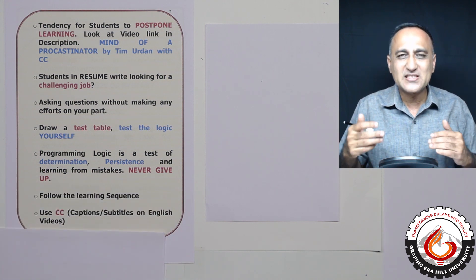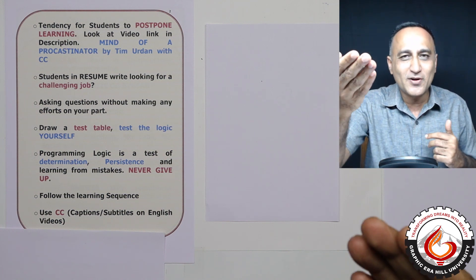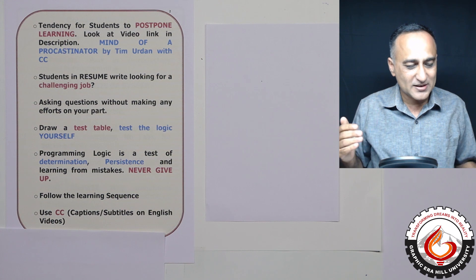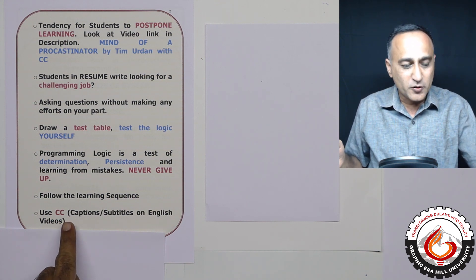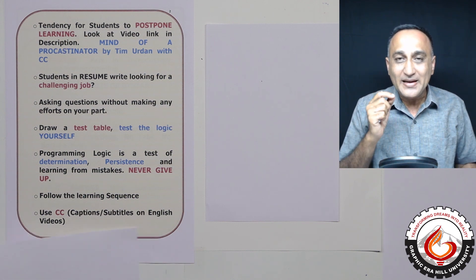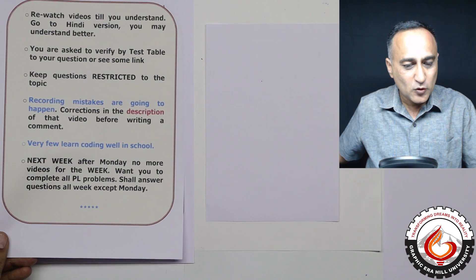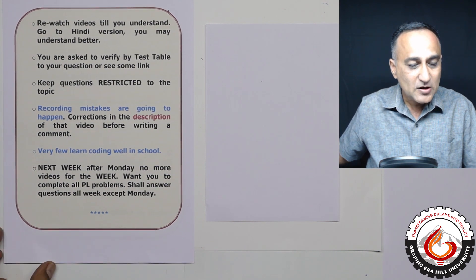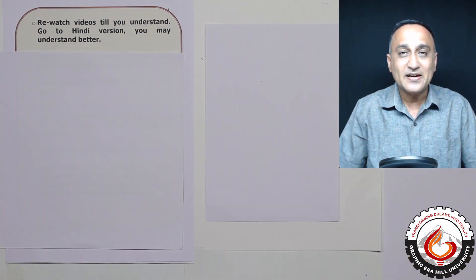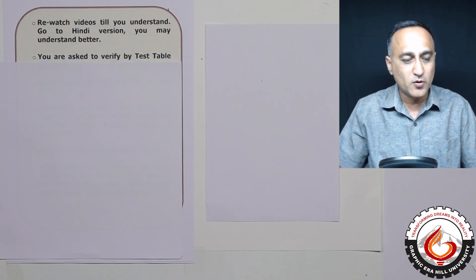Simply follow the learning sequence. Some of you jump ahead here and there, assuming you know a lot, and then you ask questions whose answers are already in a video ahead. So just go through the sequence, be patient, and repeat the video if required until you understand. Most importantly, all the English videos have captions or subtitles — use them, because sometimes I may not be clear. Another suggestion: if you don't understand the English video, the Hindi option may help you a lot. Re-listen and re-watch the video — that's how you're going to understand.